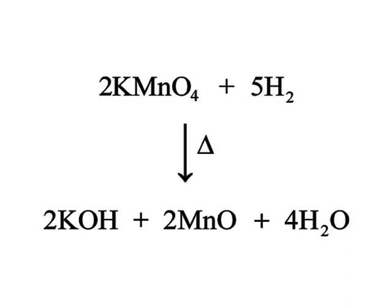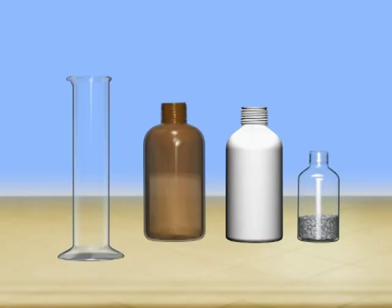Now we will discuss the action of hydrogen on potassium permanganate. On heating with hydrogen, potassium permanganate forms potassium hydroxide, manganese oxide and water. Let us see how ethanol reacts with potassium permanganate.